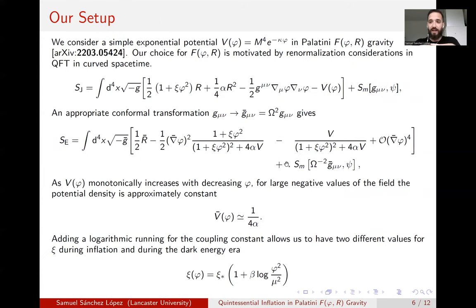Okay, so let's look at our actual setup. We consider a simple exponential potential, which is observationally discarded for inflation, and which is, although it's not observationally discarded for dark energy, it's very hard to make it work. And we fix it. We make it work as a quintessential inflation model, so both for inflation and dark energy, by considering the following modified gravity setup in the Palatini formalism. It's very simple. We just add a Starobinsky term, an R-squared term, and a non-minimal coupling between the field and gravity. Both terms are expected from renormalization considerations in QFT and curved space-time. So in a way, it's very natural to consider this.